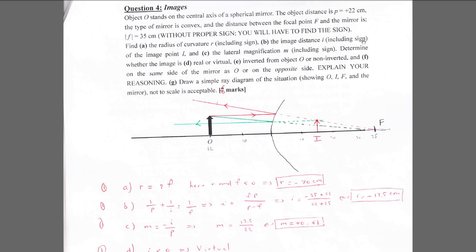For part B, find the image position i including sign. Use the mirror formula and fill in the values with appropriate signs: p positive, f negative. You get i equals minus 13.5 centimeters, which would be roughly between 10 and 20, closer to 10.